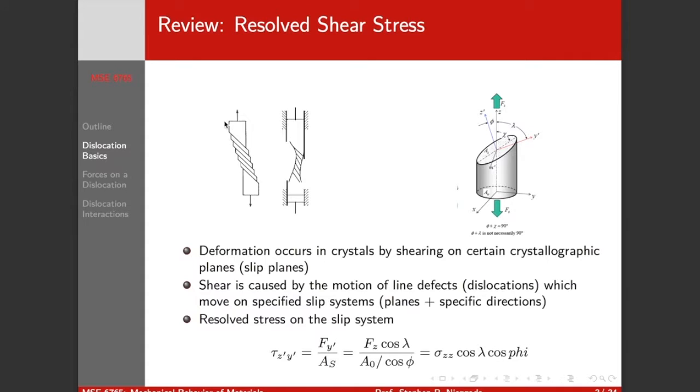And we now know that this shear is caused by the motion of line defects or dislocations which move on specified slip systems. Before dislocation theory, it was just thought that this whole plane of atoms sheared simultaneously.